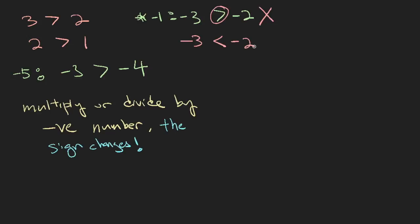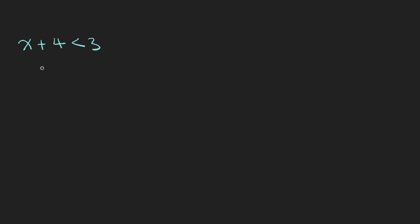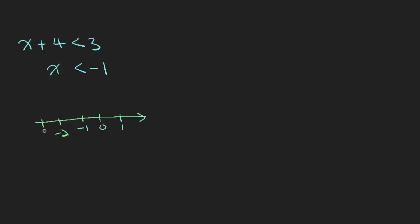So let's see how we can make use of what we've learned to solve our first example. Let's say you want to solve x plus 4 is less than 3. I want to shift the 4 over, so I minus 4 on both sides, giving x less than minus 1. You draw your number line: 0, 1, minus 1, minus 2, minus 3. Draw a circle because it's not inclusive of minus 1, and draw an arrow to the left.